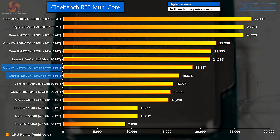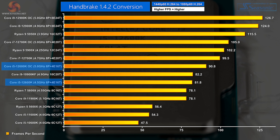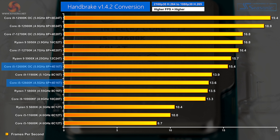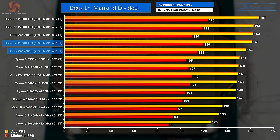Cinebench R23 multi-threaded: same story, the new Core i5 is sitting in the middle of the table and running like a champ. Single-threaded performance in Cinebench R23 looks impressive. In Handbrake H.264 conversion, the new Core i5 demolishes the old Core i5s, Ryzen 5, and Ryzen 7. Handbrake H.265 is again the same story — we're taking the fight to old Core i9s.